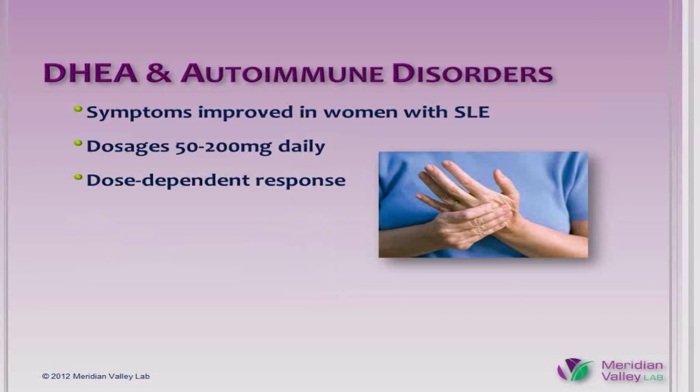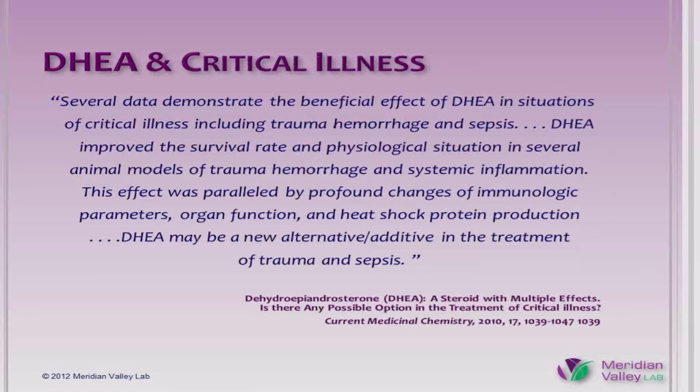DHEA and autoimmune disorders. There have been a number of studies looking at DHEA specifically in women with lupus. Dosages were from 50 to 200 milligrams daily, fairly high doses for a woman, and there did seem to be a dose-dependent response. The use of DHEA is also being investigated in the treatment of hemorrhage due to trauma and sepsis, with very positive results in animal studies. Given the absence of any serious side effects associated with DHEA supplementation, the addition of DHEA to the treatment of severely ill patients may be helpful and is highly unlikely to be harmful.